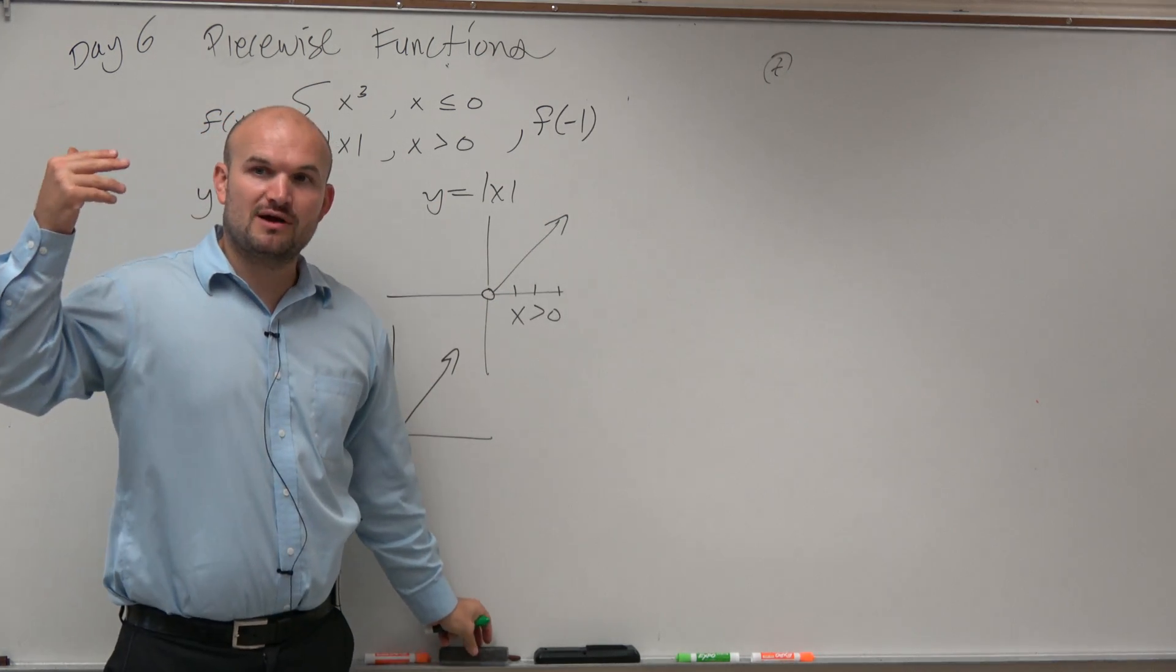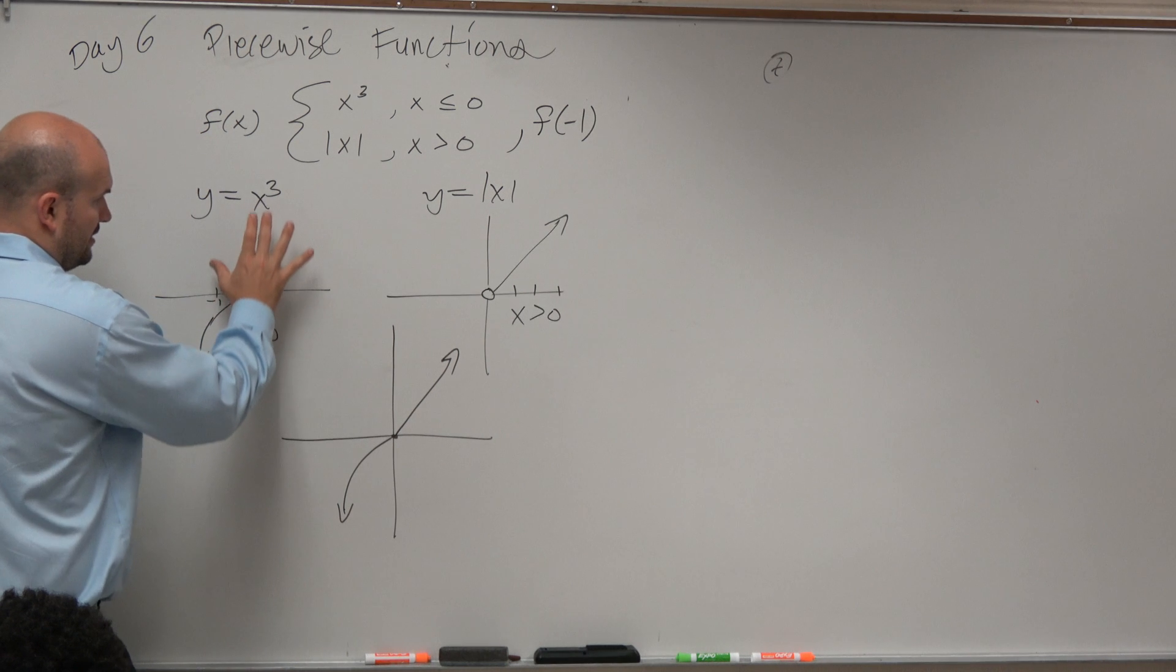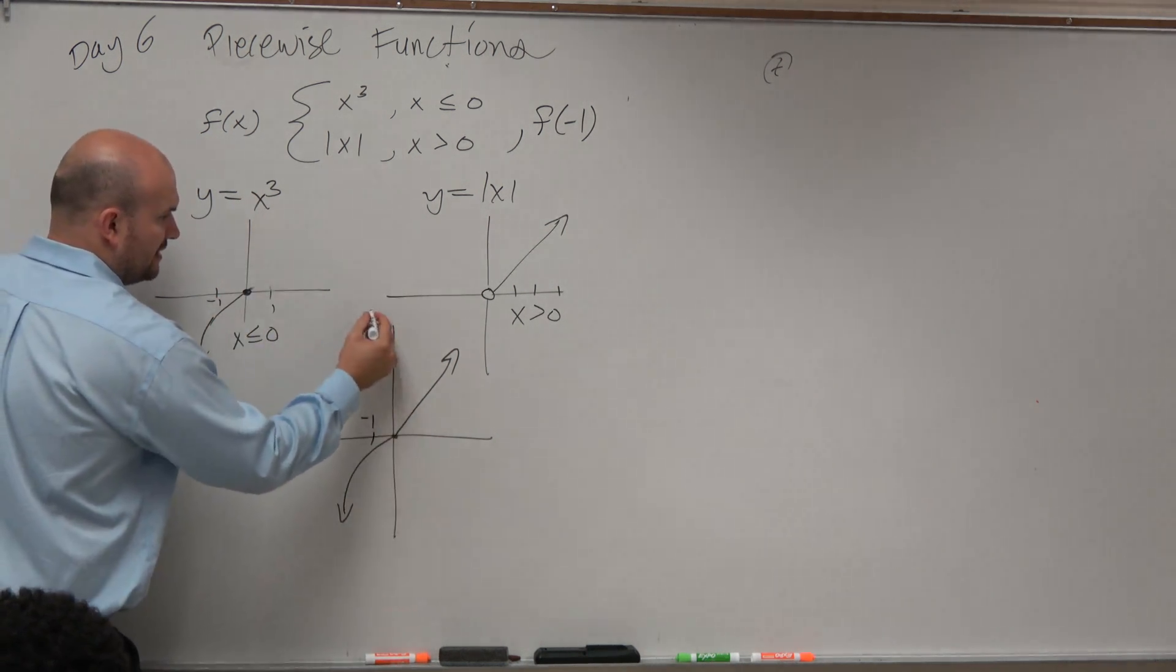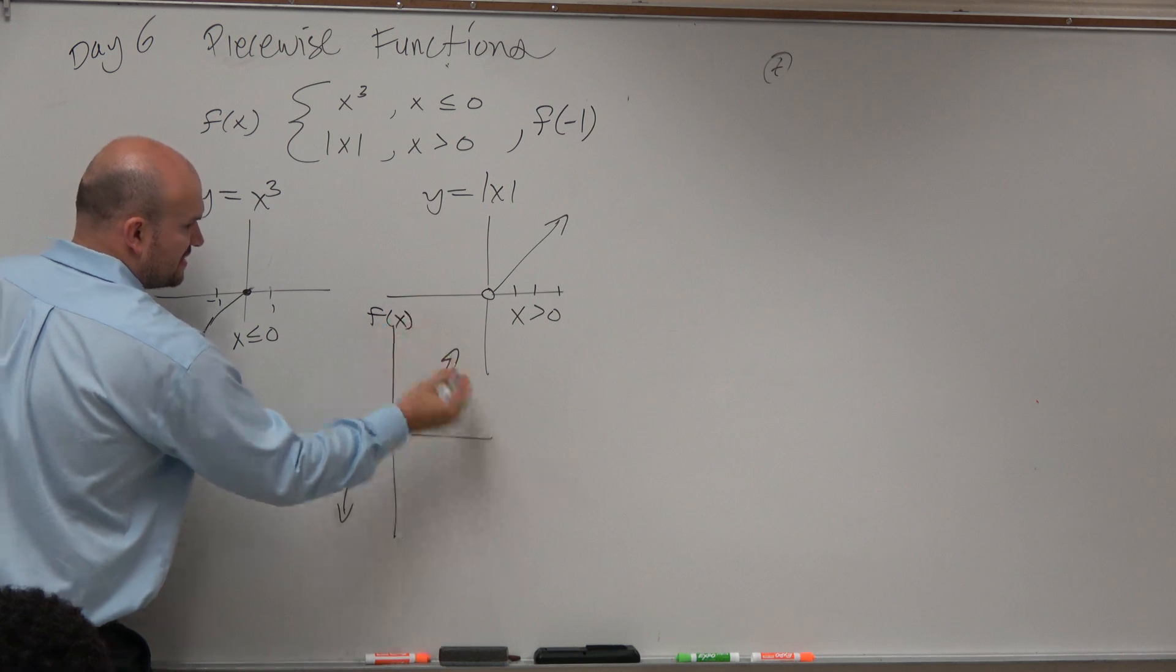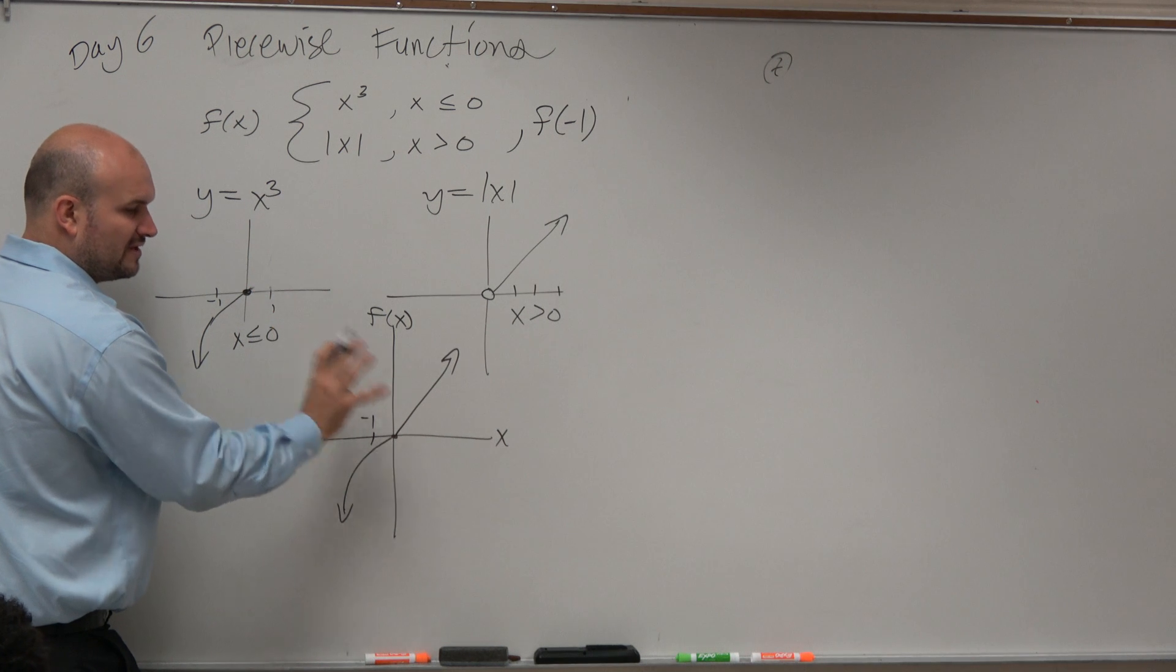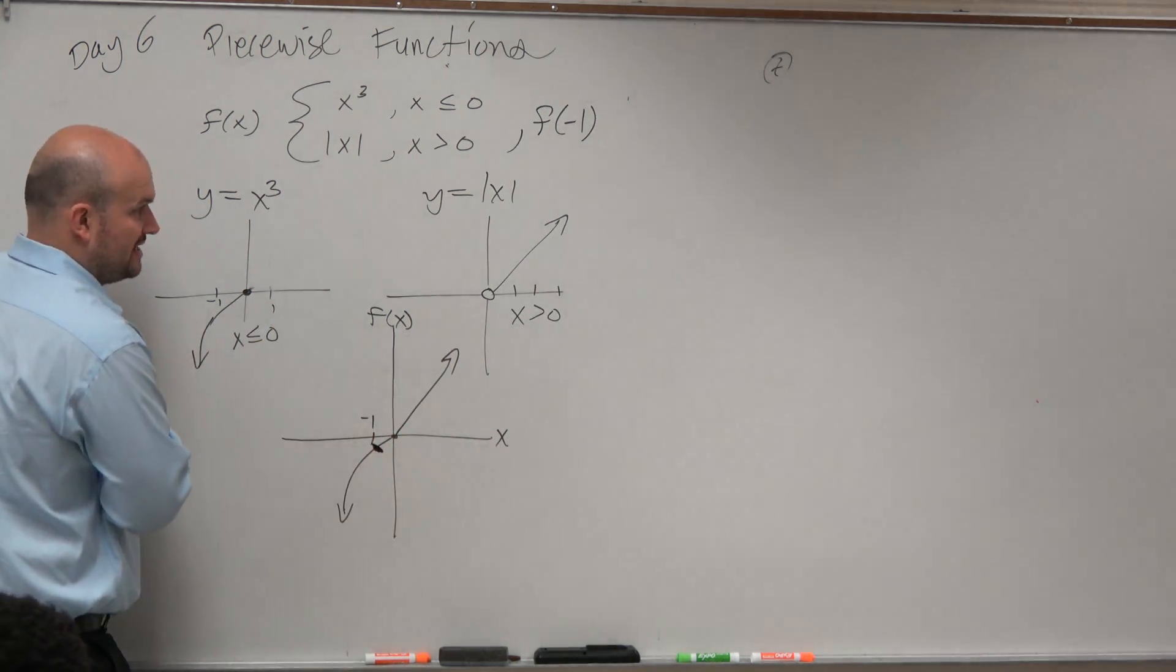The best way I can describe this is let's look at the graph. Here is the graph. Here is negative 1. Here is the f of x-axis. Here's the x-axis. When x equals negative 1, now again, forget about what the value is. Which function am I putting a dot on?